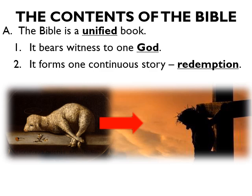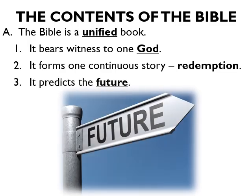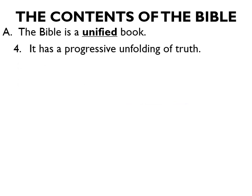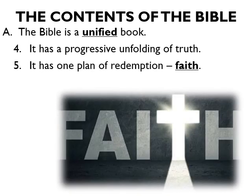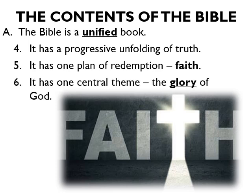Secondly, the Bible forms one continuous story — the story of redemption. Number three, the Bible also predicts the future. Fourthly, the Bible has a progressive unfolding of truth, meaning God did not reveal everything at one time but did so progressively over a specific period of time. Fifthly, the Bible has one plan of redemption — that plan is by faith. And sixthly, the Bible has one central theme: the glory of God.